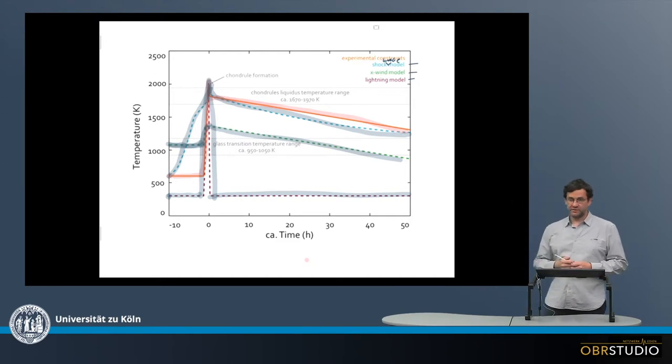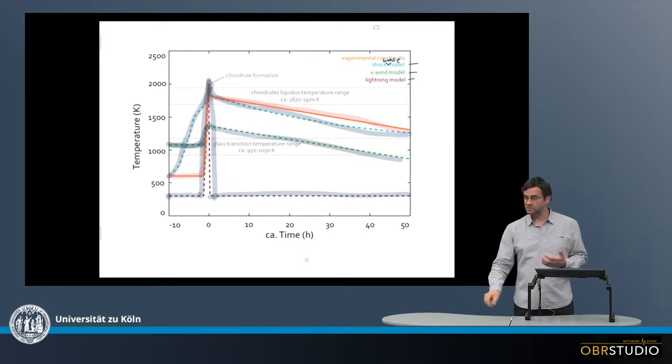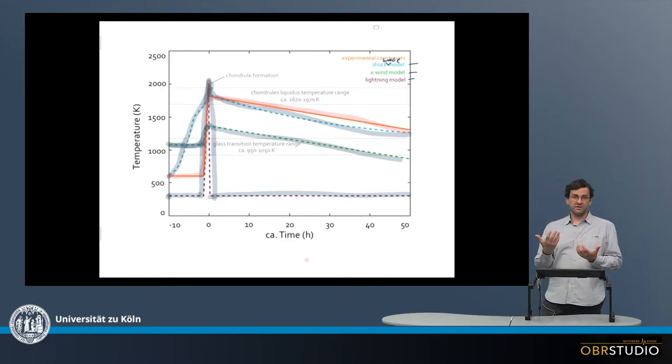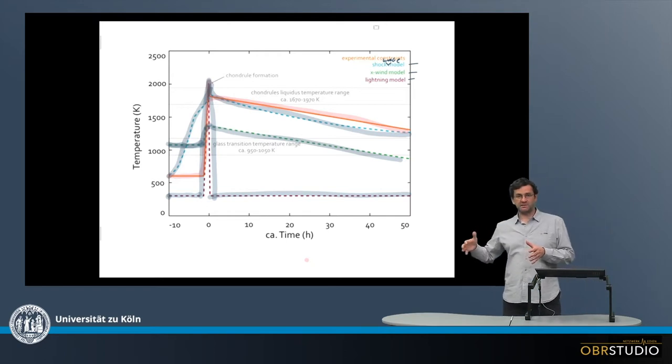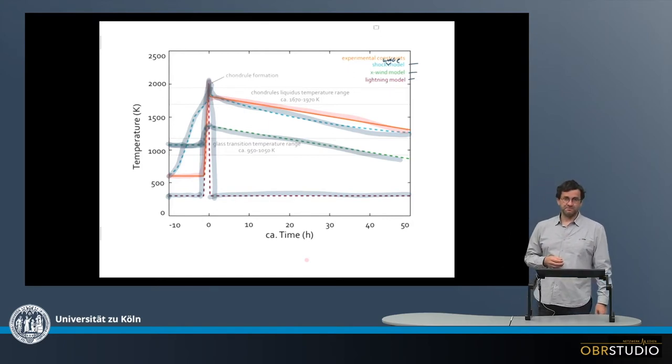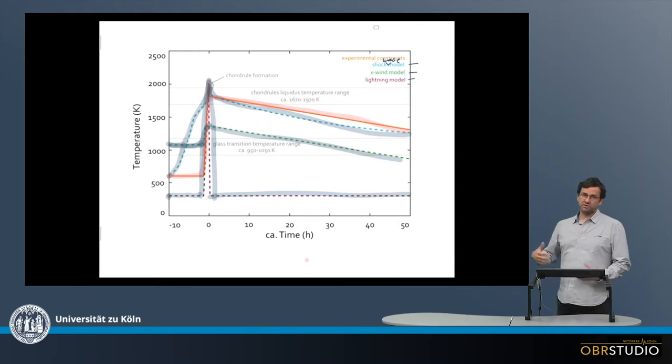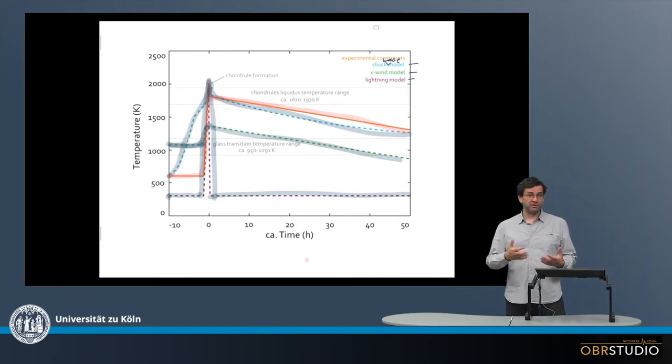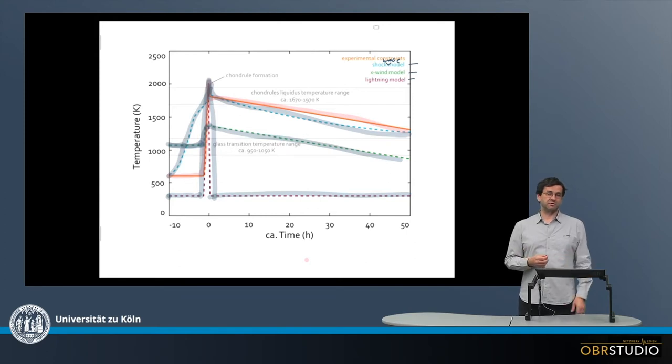So these are the various predictions from these models. And then we can compare, of course, these curves with what we have been observed. Because these are only models and they can't prove anything, they can just show us what is most likely. And at the moment the shock wave model seems to reproduce what we observe and know from experiments best. And this is one of the reasons why this is most popular.